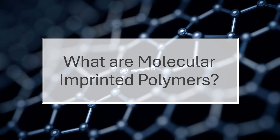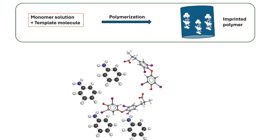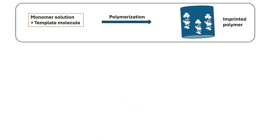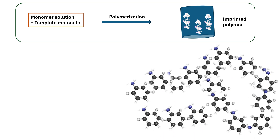These are the polymers which have an imprint of a particular molecule. For example, we have a monomer solution and we have mixed that solution with the template molecule and allowed that mixture to get polymerized. The polymer which is formed will contain the template molecules in its matrix. If we remove these template molecules from the polymer matrix, we get some cavities, and these cavities are of the same shape and same geometry as that of the template molecule.